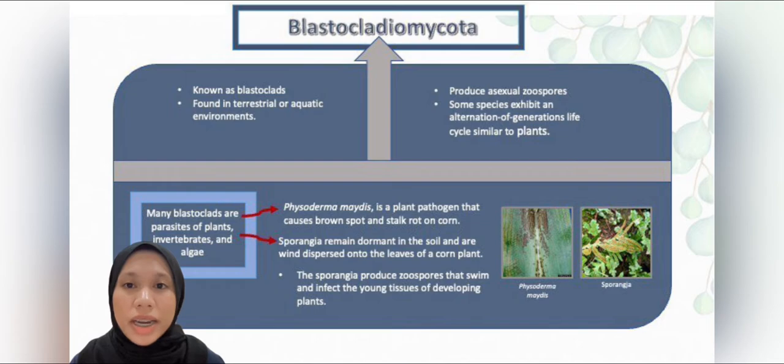There are seven fungi phyla that we are going to learn in this syllabus. Let's move on to the first fungi phylum, which is Blastocladiomycota. These blastocladiomycetes, also known as blastoclads, are found in terrestrial or aquatic environments. All members produce asexual zoospores, and some species also exhibit an alternation of generation life cycles similar to plants.